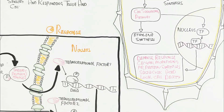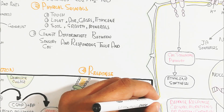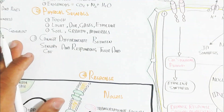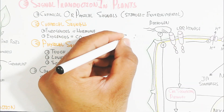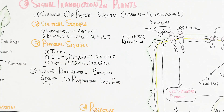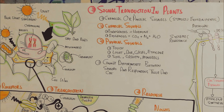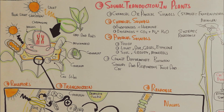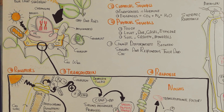The plant also synthesizes salicylic acid and undergoes local cell death as part of the defense response. Defense proteins and cell wall modifying proteins work together to inhibit pathogen invasion and infection, leading to systemic acquired resistance throughout the plant.